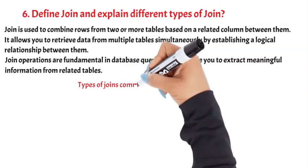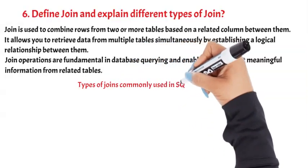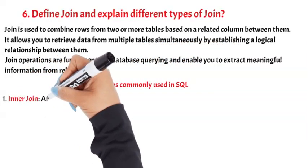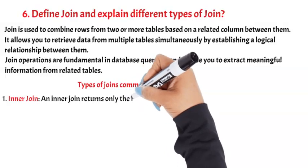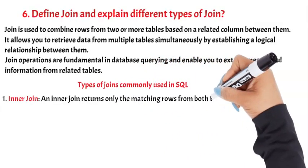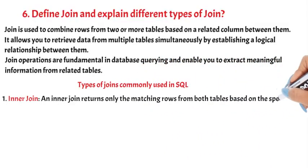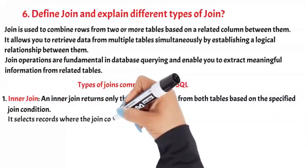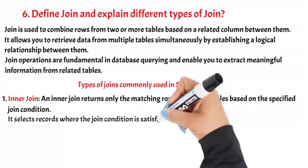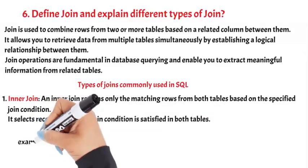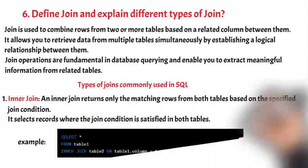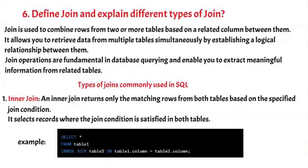Types of joins commonly used in SQL. 1. INNER JOIN: Inner join returns only the matching rows from both tables based on the specified join condition. It selects records where the join condition is satisfied in both tables. In this example, the inner join combines the rows from Table1 and Table2 based on the matching values in the specified columns.